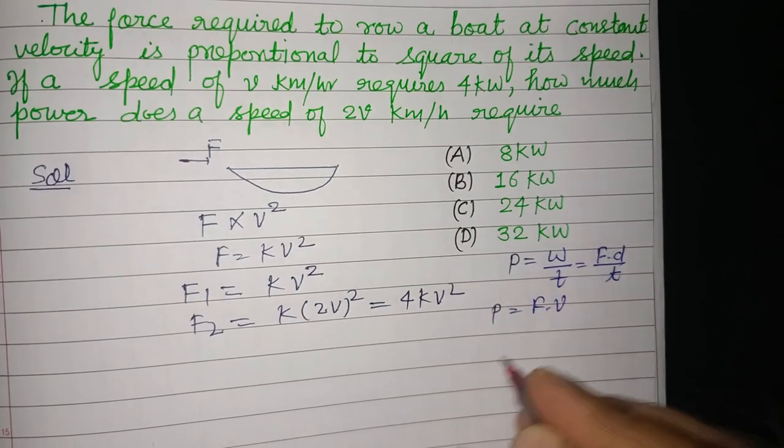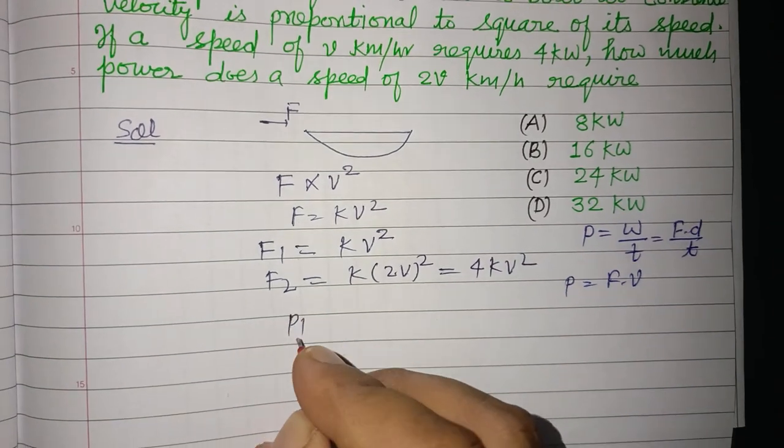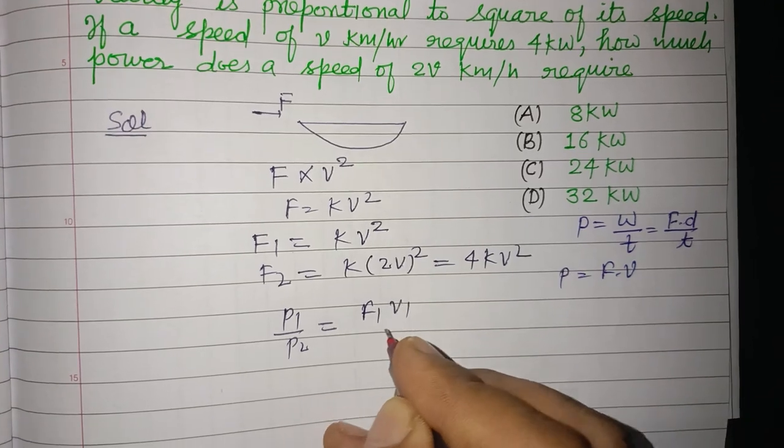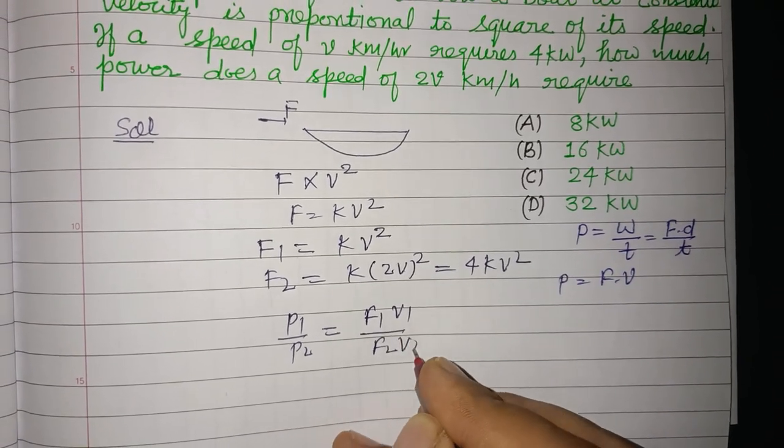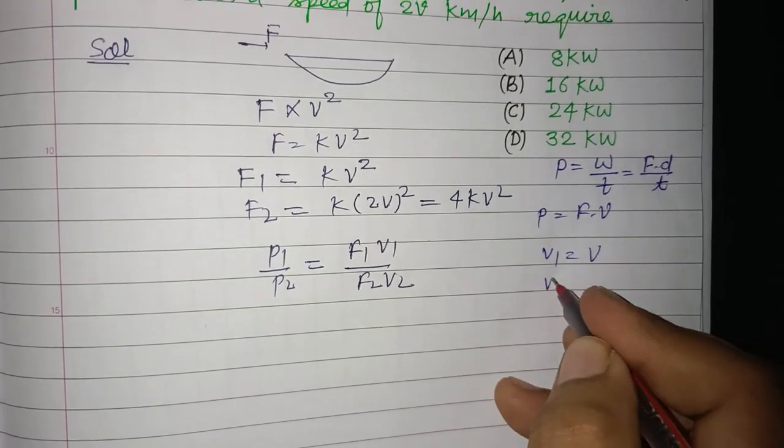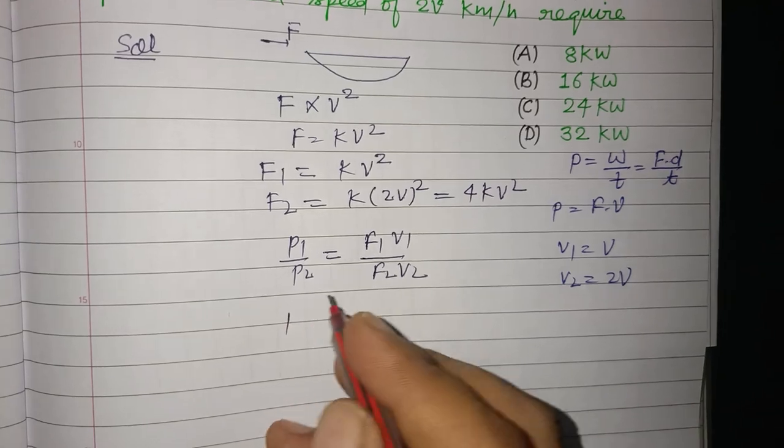Using this formula, we write P1/P2 equals F1V1 upon F2V2. Here V1 is V and V2 is 2V. P1 is given to us, which is 4 kilowatts.